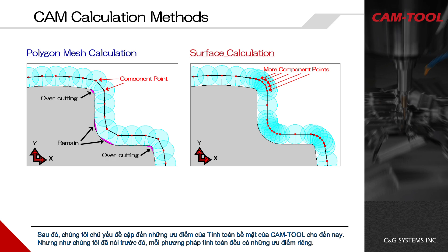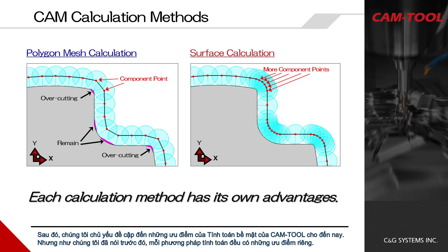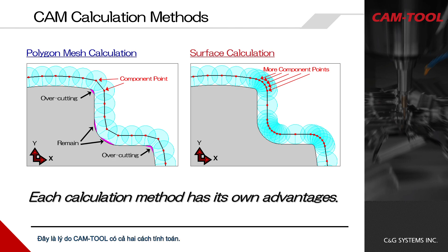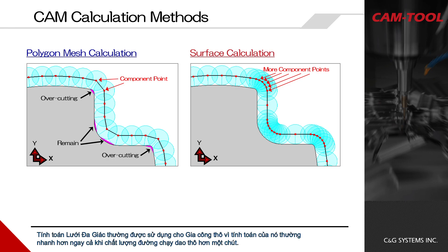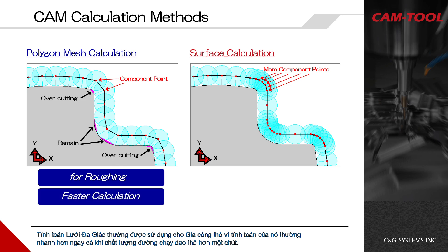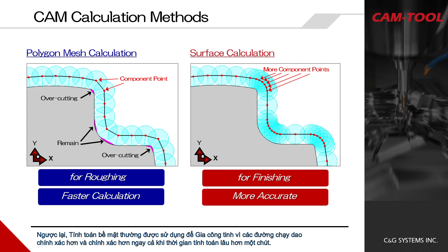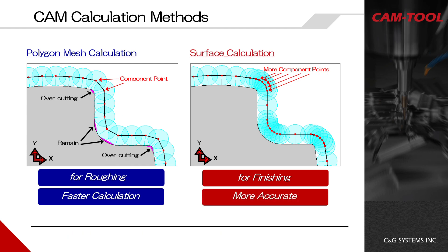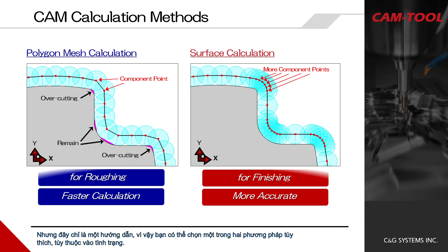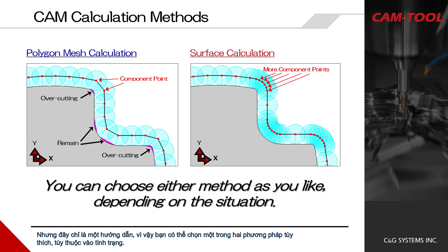We have mainly mentioned the advantages of CamTool's surface calculation so far, but as mentioned earlier, each calculation method has its own advantages — this is the reason CamTool has both. Polygon mesh calculation is normally used for roughing because its calculation is usually faster, even if the toolpath quality is a little rougher. Surface calculation is generally used for finishing since the toolpaths are more accurate and precise, even if the calculation time is a little longer. But this is just a guide; you can choose either method depending on the situation.